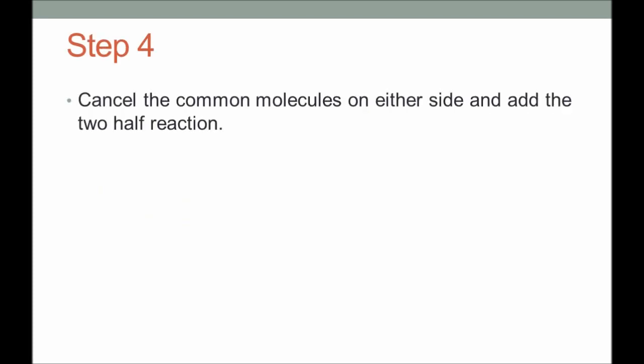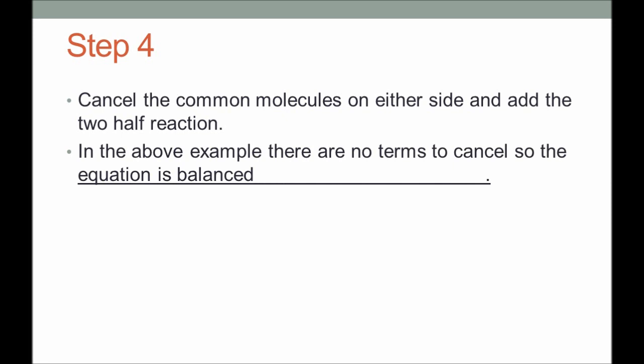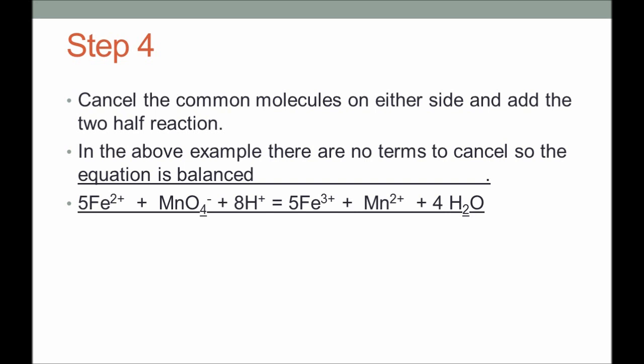If on the reactant side and the product side you have similar elements or compounds, cancel them. In this example we don't have any such atoms or molecules, so the equation is balanced: 5Fe²⁺ + MnO₄⁻ + 8H⁺ → 5Fe³⁺ + Mn²⁺ + 4H₂O. The presence of hydrogen ions on the reactant side indicates the equation has been balanced in acidic medium.